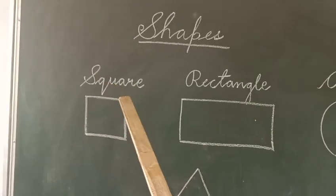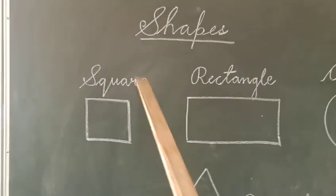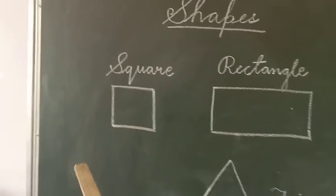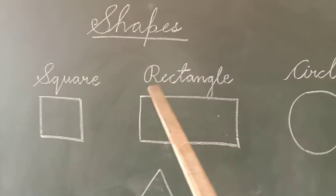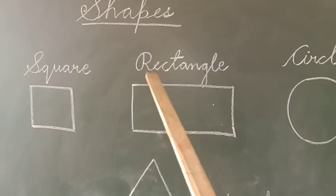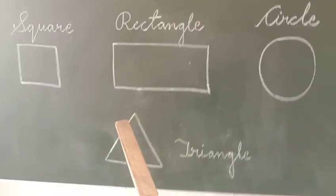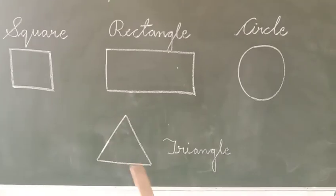So first, what has been drawn on the board - this is your square. Second is your rectangle. This is your rectangle, this is your circle, and this is your triangle.